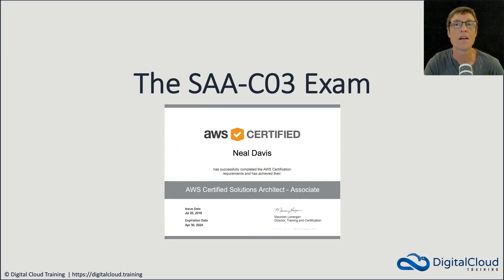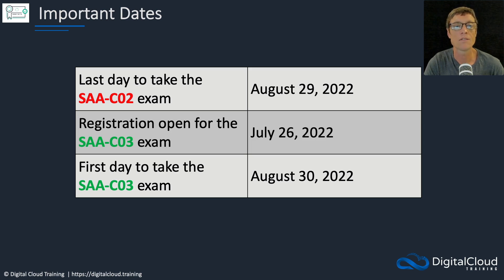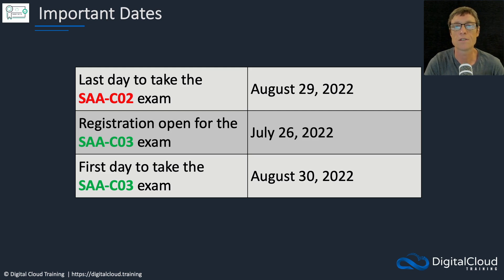In this lesson I'm going to cover the details about the SAA-C03 exam so that you understand what to expect when you go and sit your exam and what you're going to need to know. I'll also cover the differences between the older version, the C02 and the C03. The exam is changing and the last day to take the C02 exam is August 29th, 2022. Registration is open for the C03 exam from July 26th and the first day to take the new exam is August 30th. They've just revised some of the topics that are included.